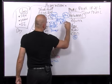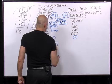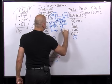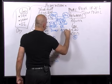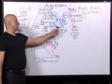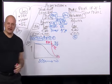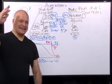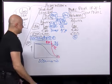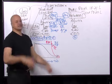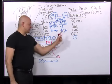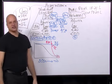Nephrogenic diabetes insipidus can be from chronic kidney disease, or from low potassium and high calcium. You need a normal potassium and a normal calcium level for ADH to work correctly at the kidney tubule.